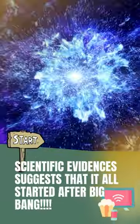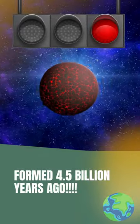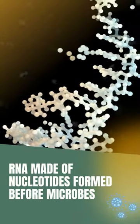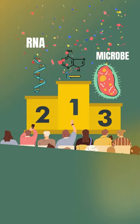Evidence we have till date suggests that Earth came into existence 4.5 billion years ago. We know that the RNA made of nucleotides most likely formed on Earth before unicellular life forms.